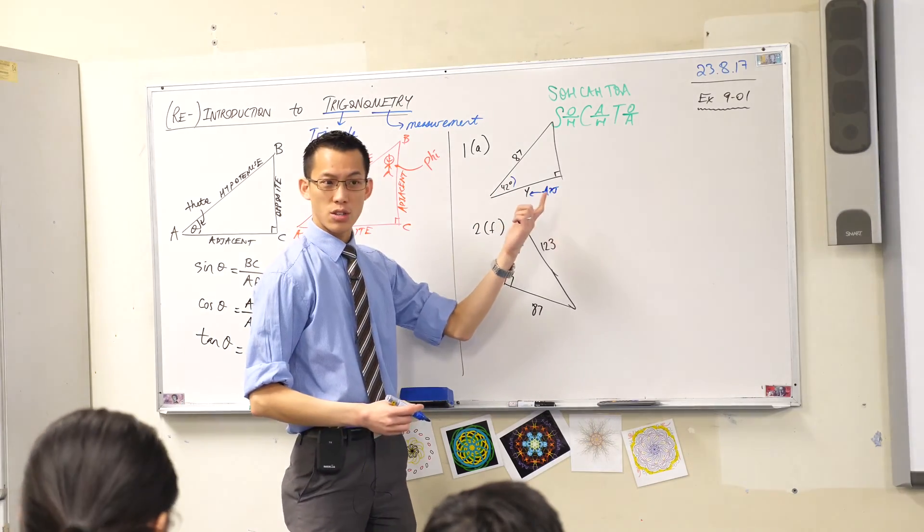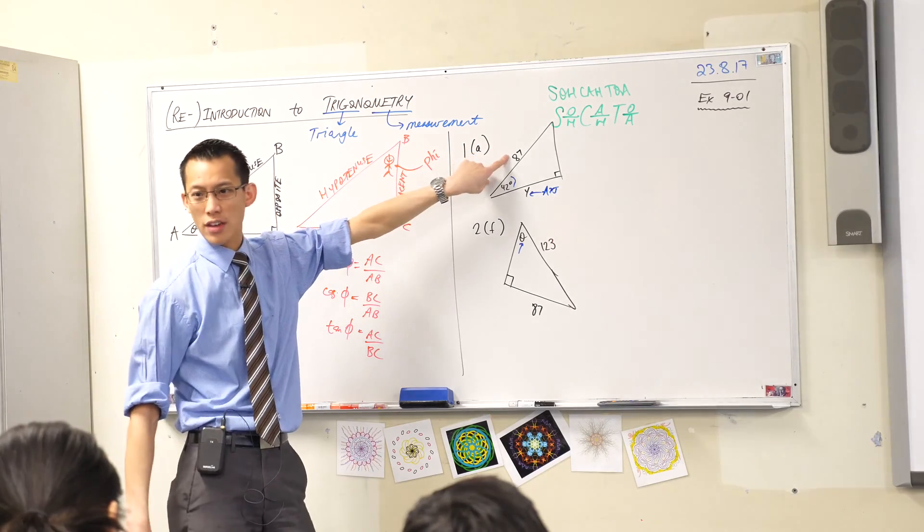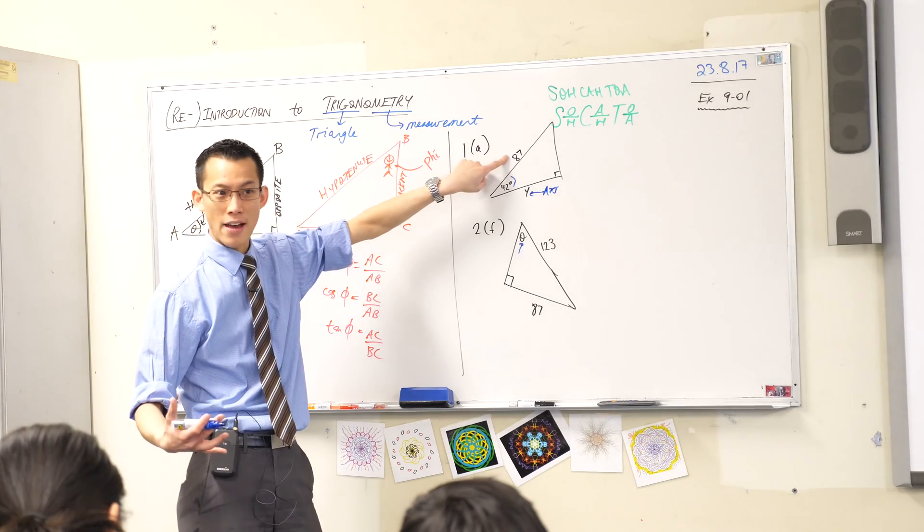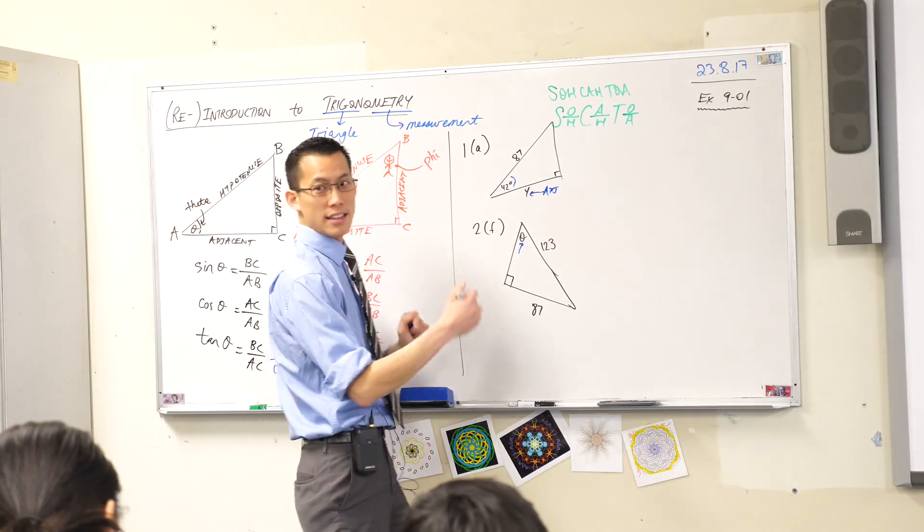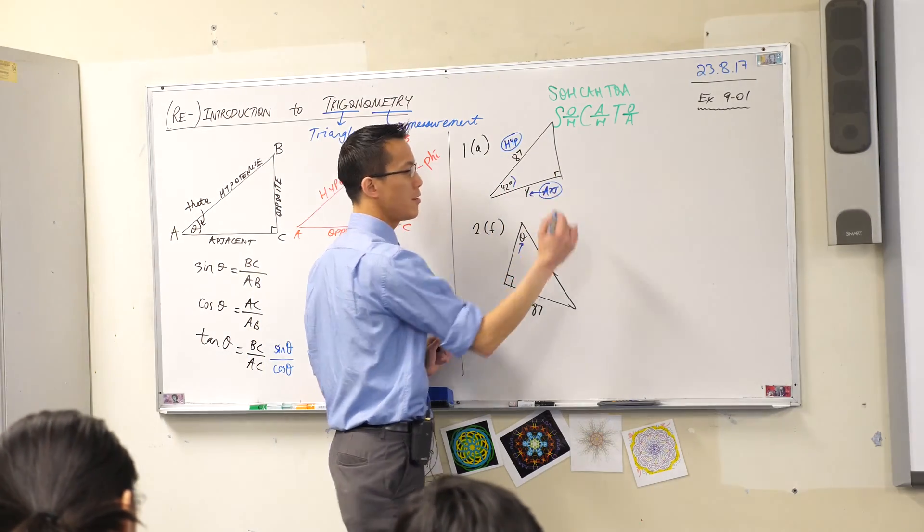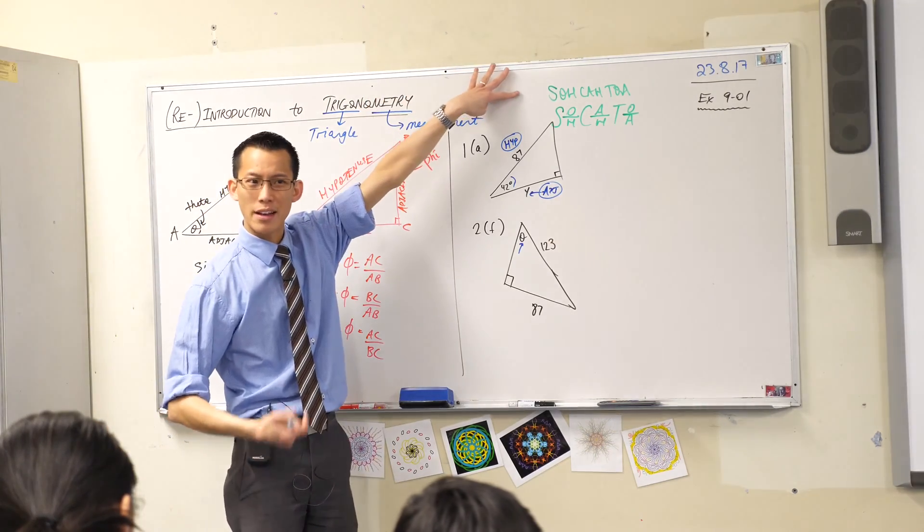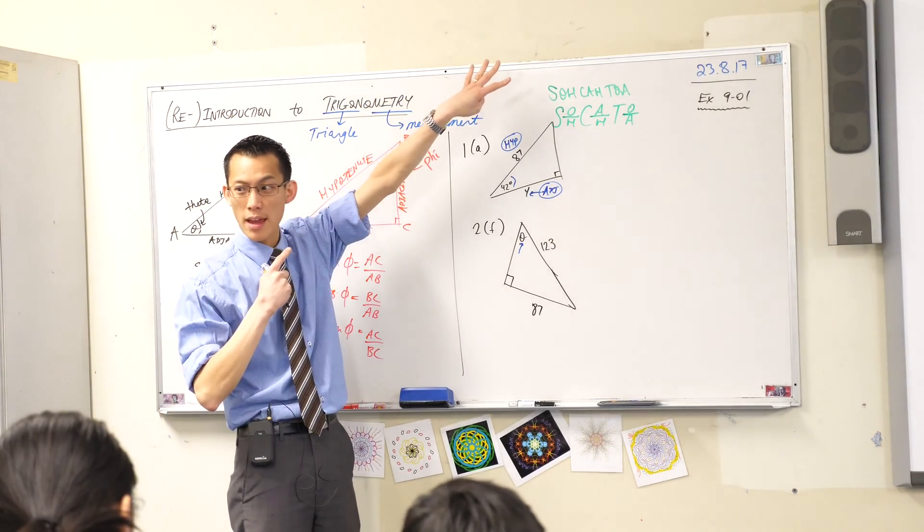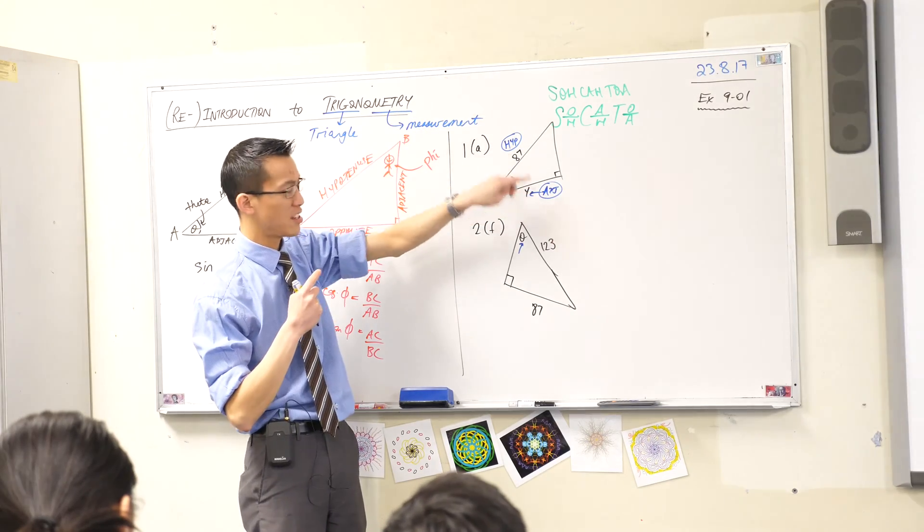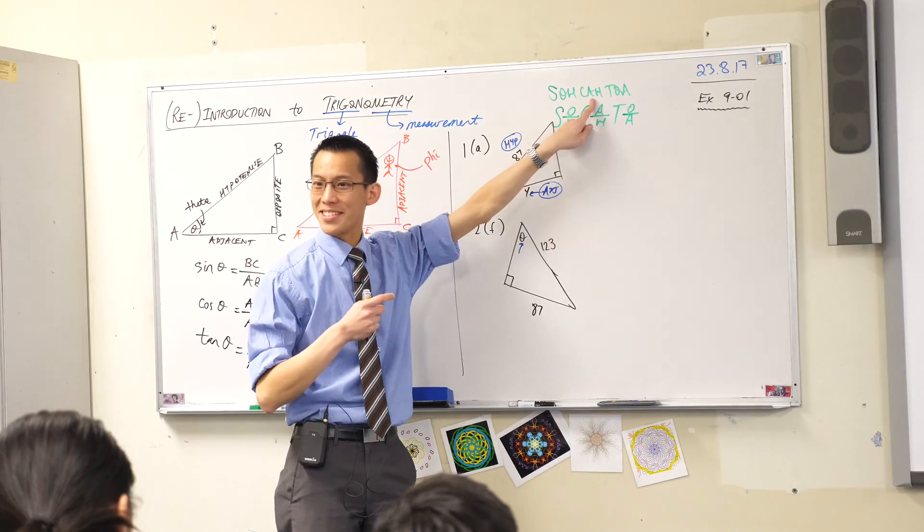So I know I'm going to use a trig ratio with adjacent in it. Have a look at the other side that I have, the other information I have access to. It's the hypotenuse in this triangle. So I've got the adjacent and the hypotenuse. I think about my mnemonic and which ratio is this? Adjacent over hypotenuse - this is going to be cos, isn't it?